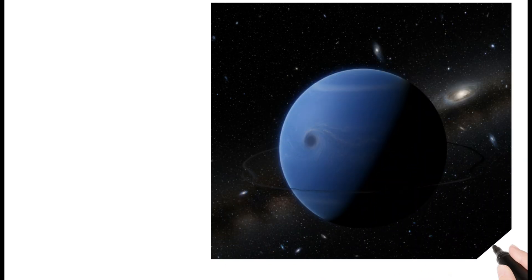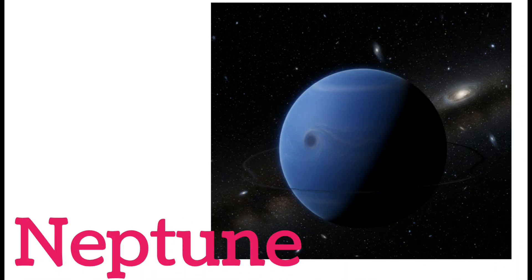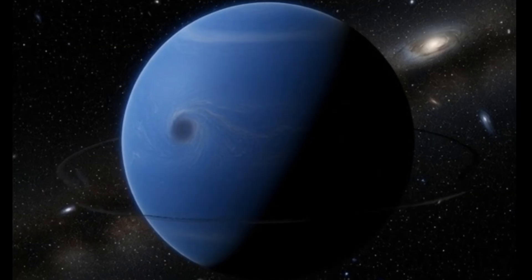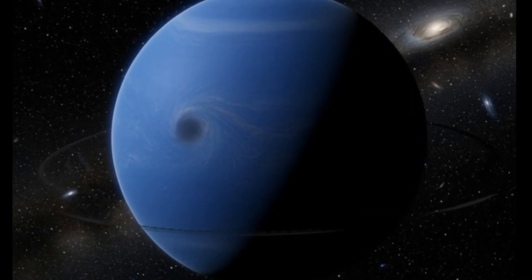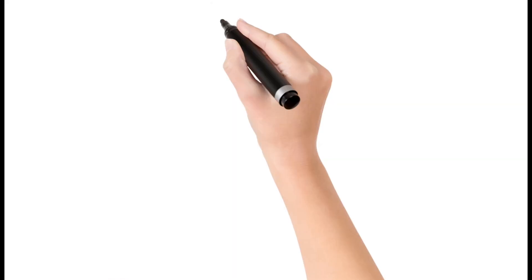Next, Neptune. Neptune is the farthest planet from the Sun. It has the fastest winds in space. The planet looks deep blue. It is very cold and stormy.